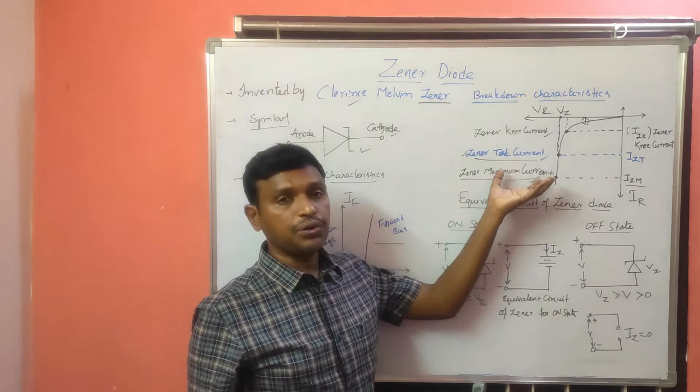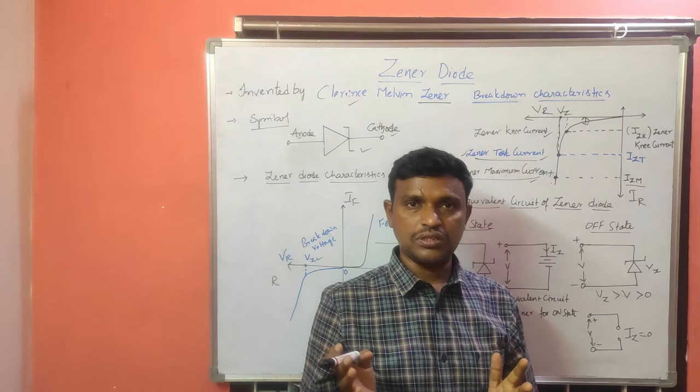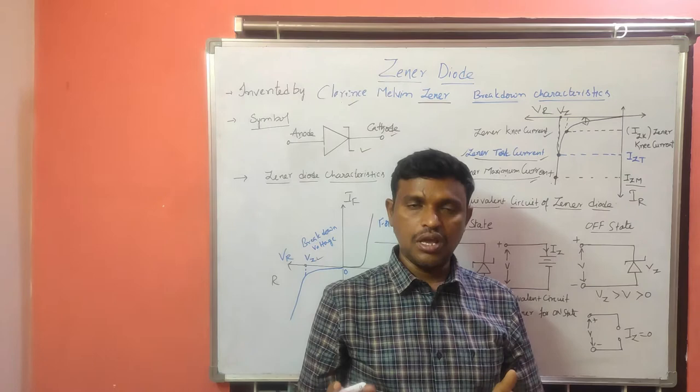This is the breakdown characteristics of the GINA diode. I am not explaining the movement of holes and electrons because it is the same as the normal PN junction diode operation. The only difference is the doping concentration and the reverse breakdown that will appear.